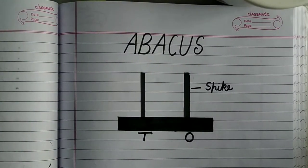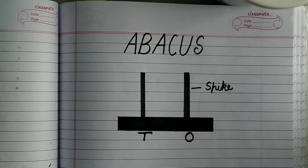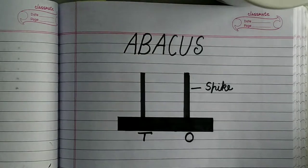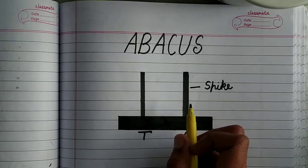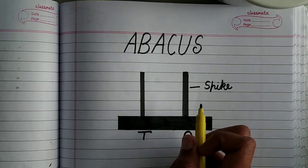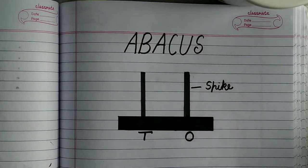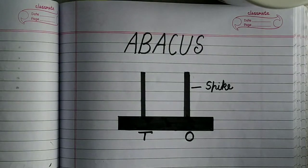So one rule is there. To write any number in Abacus, there is one rule. That is in each spike, that is in each rod, I can insert only nine beads. That means I have to insert beads in them to write numbers.